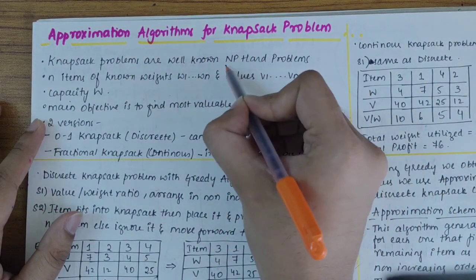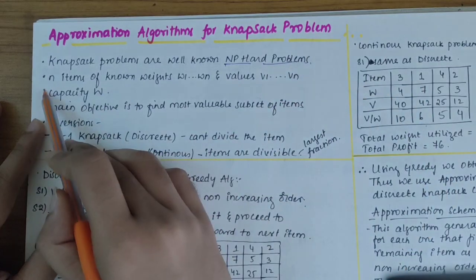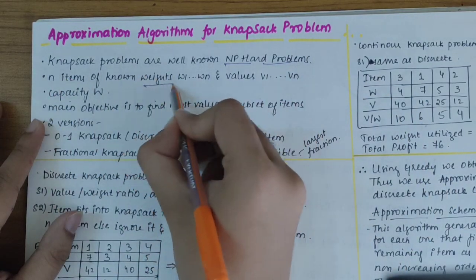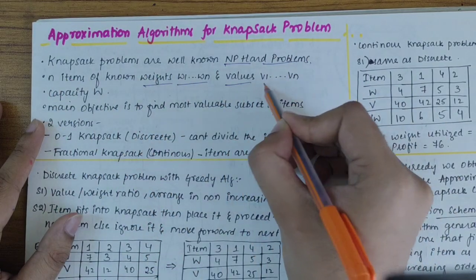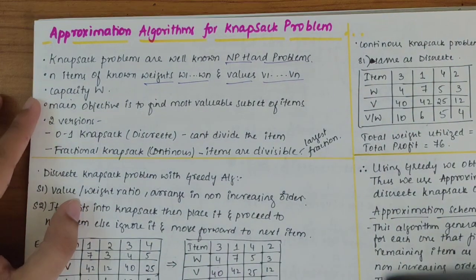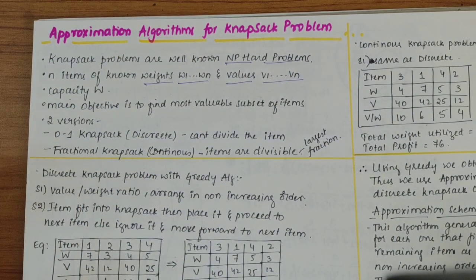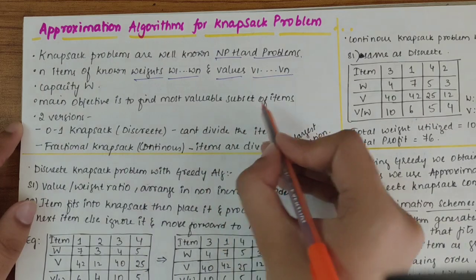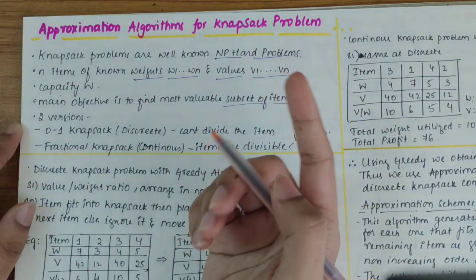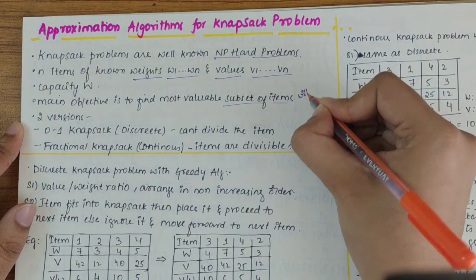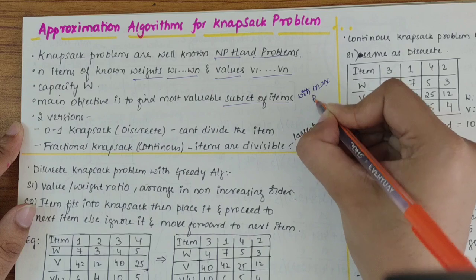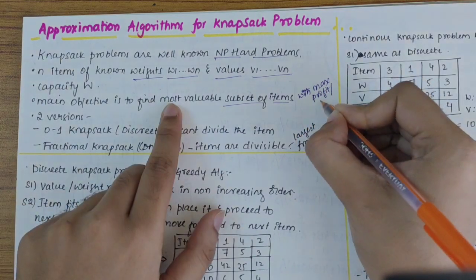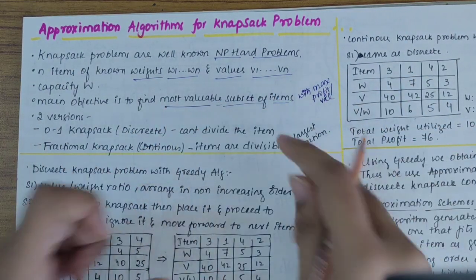Knapsack problems are well-known NP-hard problems. It has N items of known weights from W1 to WN and values or profits V1 to VN, with a capacity of W, that is the sack capacity. The main objective is to find the most valuable subset of items with maximum profit or value.